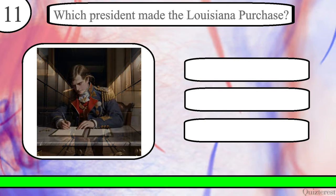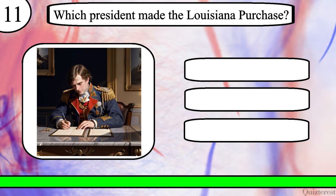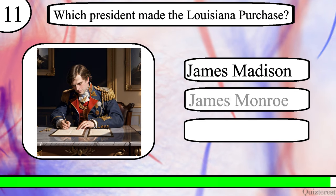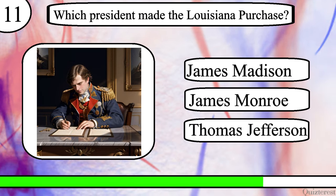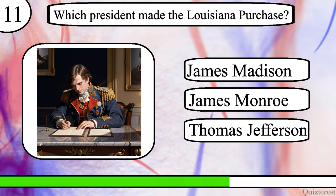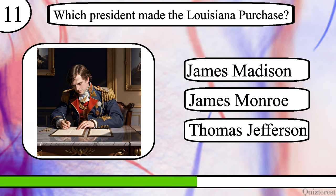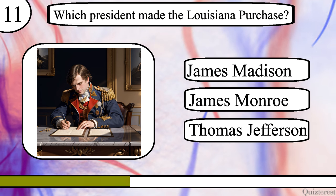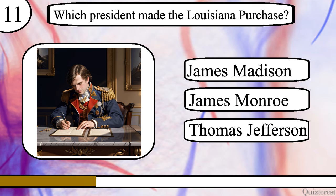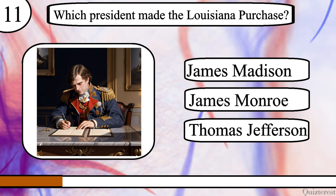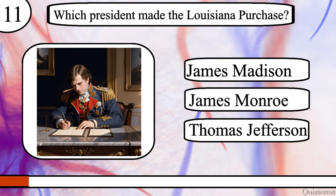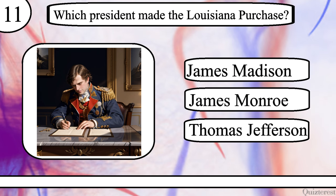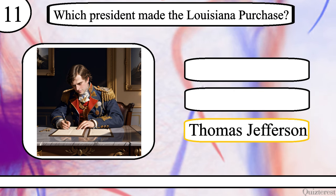Question 11. Which President made the Louisiana Purchase? James Madison, James Monroe or Thomas Jefferson? The correct answer is Thomas Jefferson.